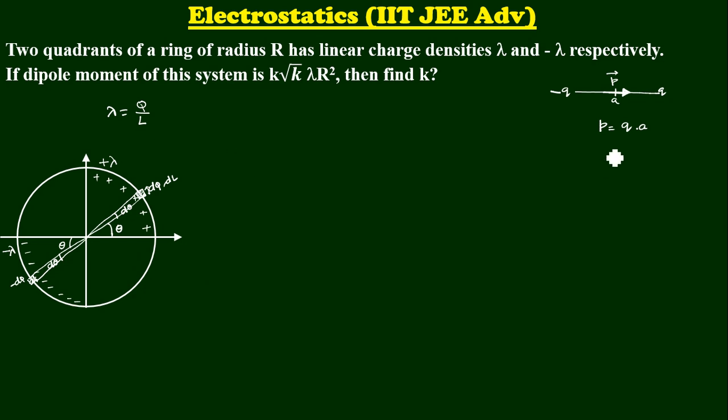So, now, P is equal to either charge times separation. That is what the dipole moment is what we have just discussed. Now, it is a small charge. So it is going to be small dipole moment dP. That is going to be small charge DQ and separation between them. What is the separation between them? 2R. Now, what is DQ by the way?